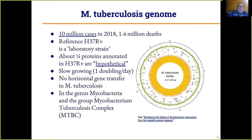Before the coronavirus pandemic, tuberculosis was the world's deadliest infectious disease. The reference strain H37Rv is a laboratory strain isolated in the 1930s from a sample collected in the early part of the 20th century. About a quarter of the proteins annotated in the H37Rv reference genome are listed as hypothetical.